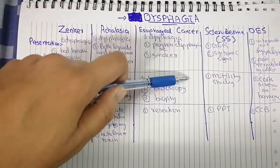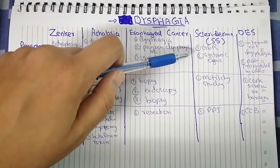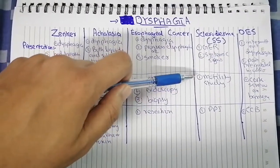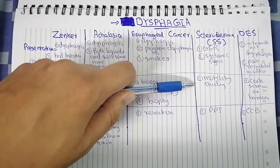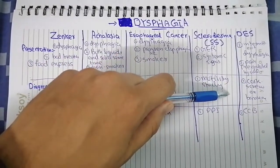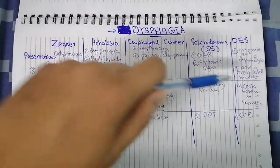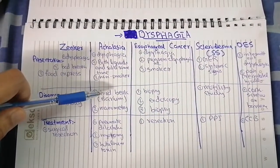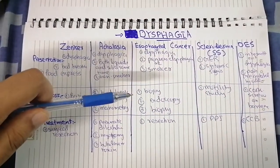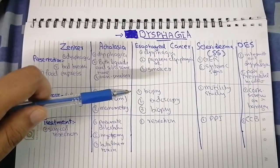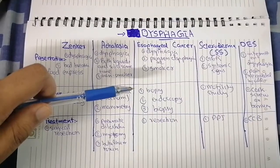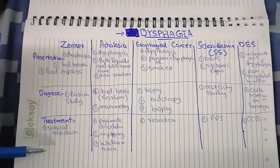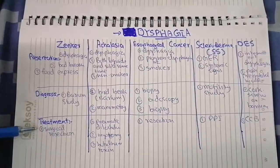For esophageal cancer, you need to do endoscopy and biopsy. In scleroderma, the lower esophageal sphincter neither relaxes nor contracts — peristalsis is absent — so we need to do a motility study. For diffuse esophageal spasms, the classic finding on barium study is a corkscrew pattern. You can differentiate Zenker's, achalasia, and DES on barium study, while scleroderma requires a motility study and esophageal cancer requires endoscopy and biopsy.